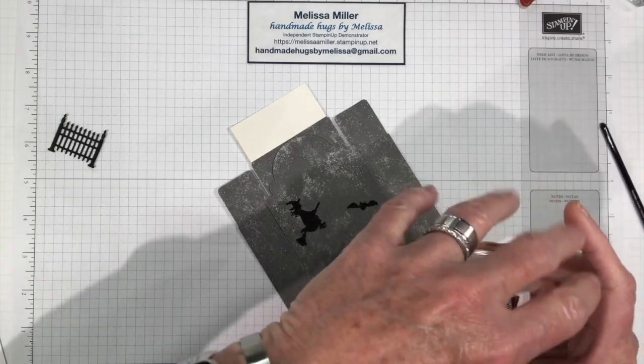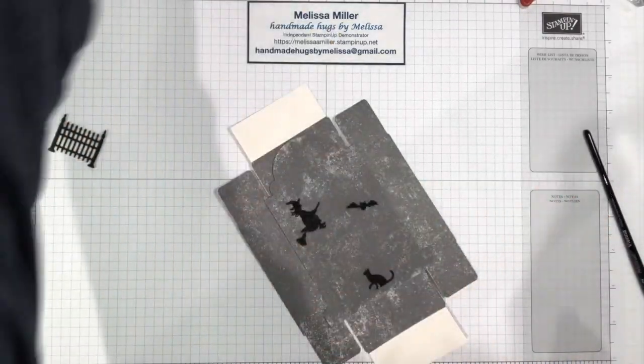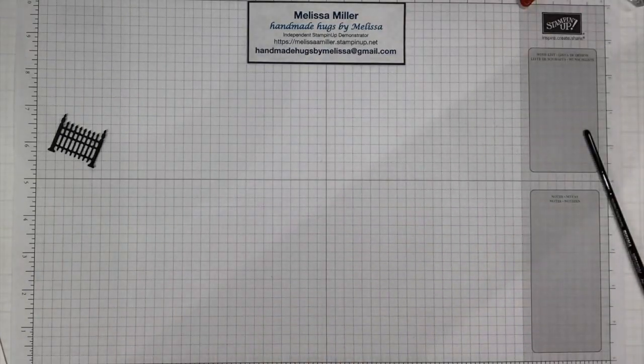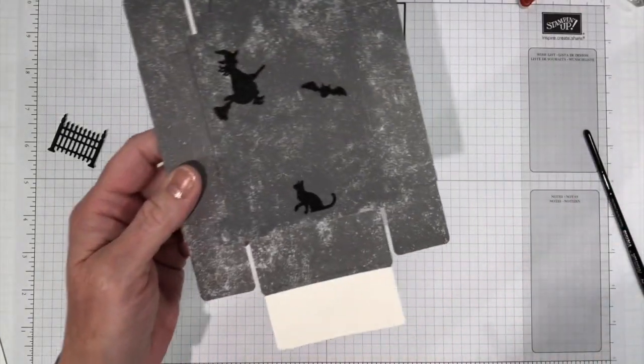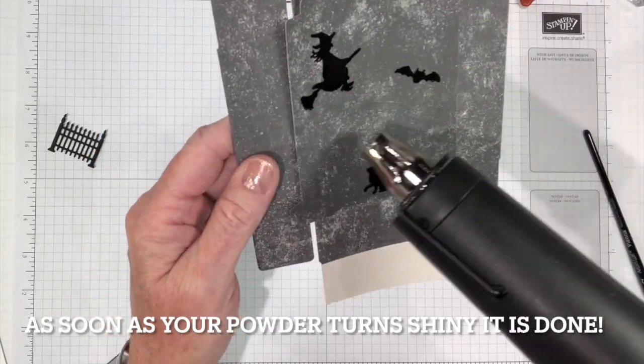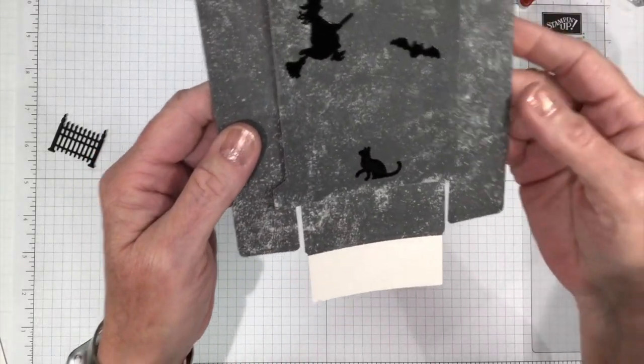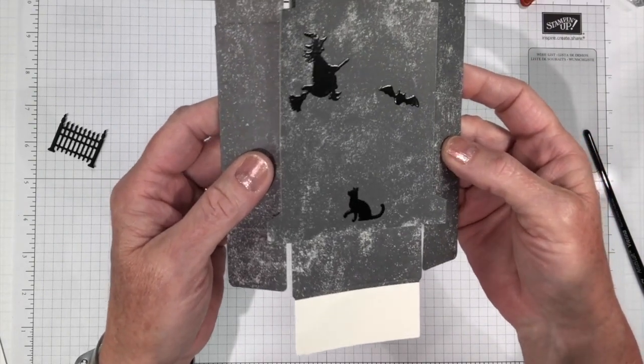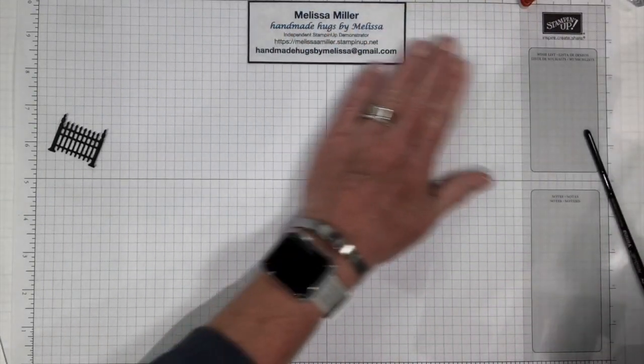Let's get our powder out of the way and we will heat emboss. Now when we heat emboss it's going to turn shiny. So as soon as you see it turn shiny you know that it's heated and you're good to go. That didn't take too long. It only takes a second and as soon as it turns shiny you know that you're good to go.